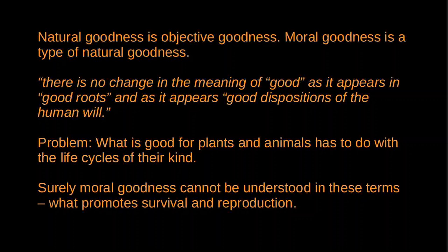Foot notes that there is an obvious concern about this kind of view. What is good for plants and animals has to do with what is characteristic of their life cycles - what's involved in development, survival, and reproduction. What conceptually determines goodness in a feature or operation is the relation for the species of that feature or operation to survival and reproduction. The trouble is that it seems clearly implausible to understand moral goodness - what human beings ought and ought not to do - just in terms of what promotes survival and reproduction. Consider a person who chooses to be childless, who chooses not to reproduce and instead focus on their career. Surely that's fine. We don't want to say that abstaining from reproduction is morally wrong or defective in any way.